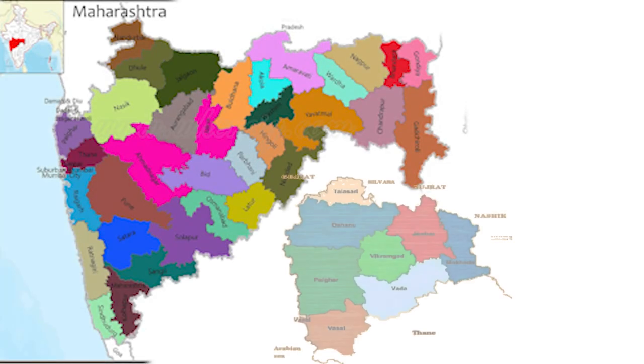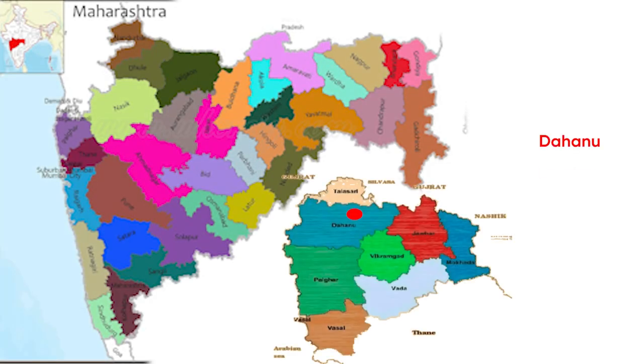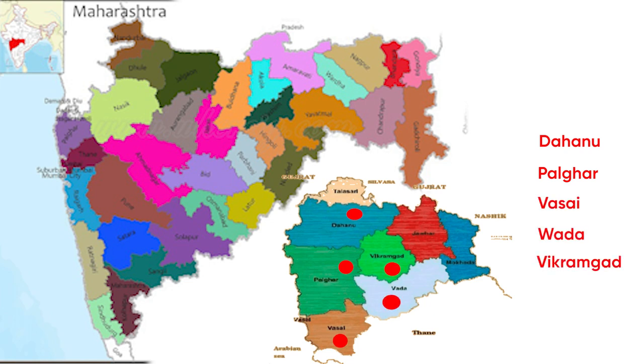Varli painting can be found in Dahanu, Palghar, Vase, Vara, Vikramghar, and Jawar areas of Palghar district in Maharashtra.